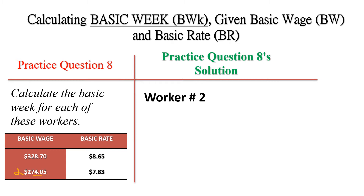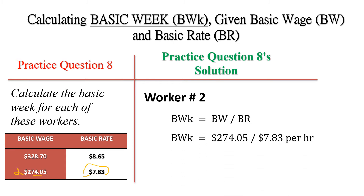Worker number two gets paid $274.05 at a basic rate of $7.83. His basic week would be $274.05 divided by $7.83, giving us 35 hours as the basic week.